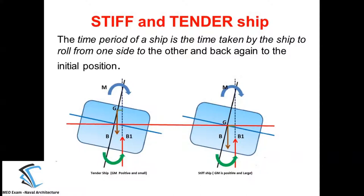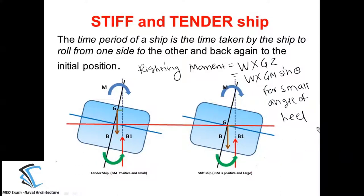The righting moment is the only force bringing back the ship to its original condition. Righting moment is equal to W × GZ, and GZ can be written as GM × sin θ for a small angle of heel. So in the righting moment, the righting moment is directly proportional to GM. If the GM is positive but very large, the righting moment will also be large, and the ship will come back to its original position very fast.